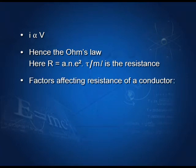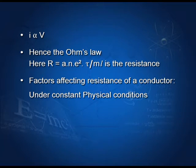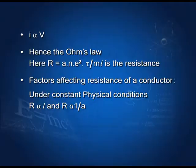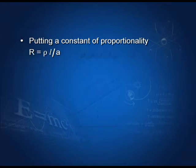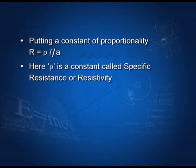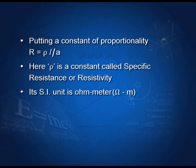Factors affecting resistance: under constant physical conditions, resistance is directly proportional to the length L of the conductor and inversely proportional to the area of cross-section A. A longer wire has greater resistance; a finer wire has higher resistance. Combining these, R is directly proportional to L/A. Putting a constant of proportionality rho, we get R equals rho·L/A. Here rho is called resistivity or specific resistance. Its SI unit is ohm-meter. From the formula, rho equals m/(ne²τ).